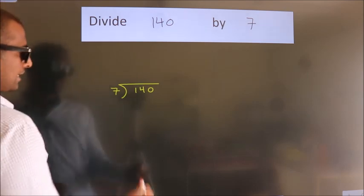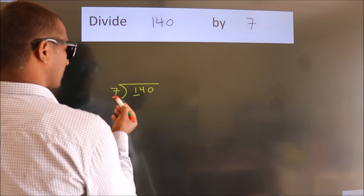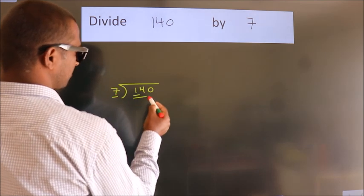Next, here we have 1, here 7. 1 is smaller than 7, so we should take 2 numbers: 14.